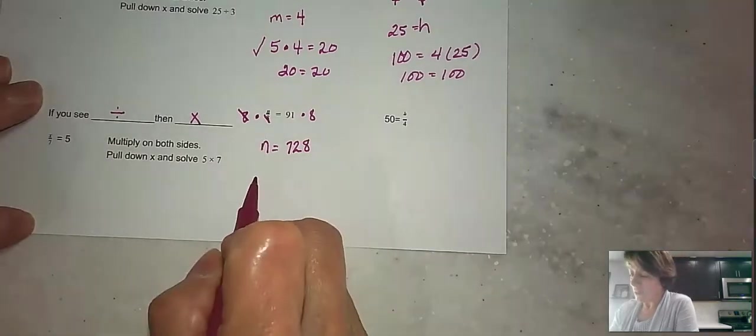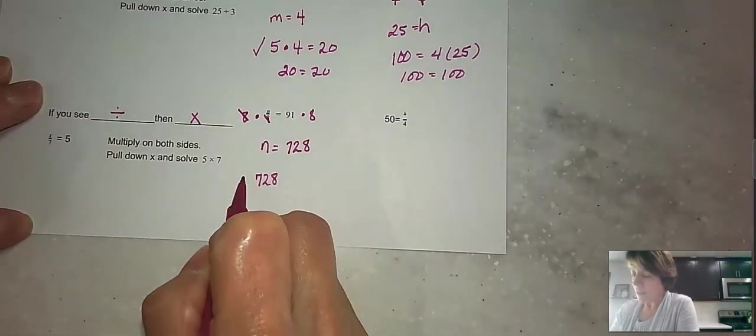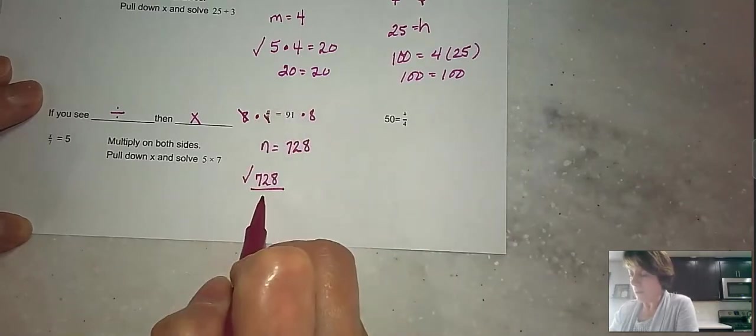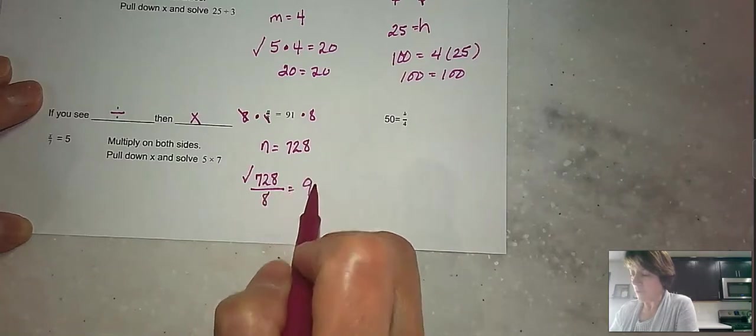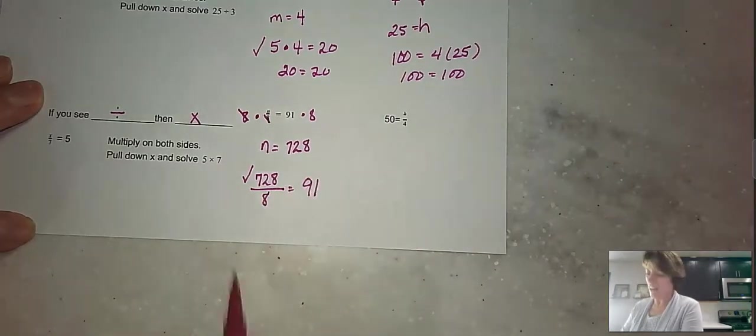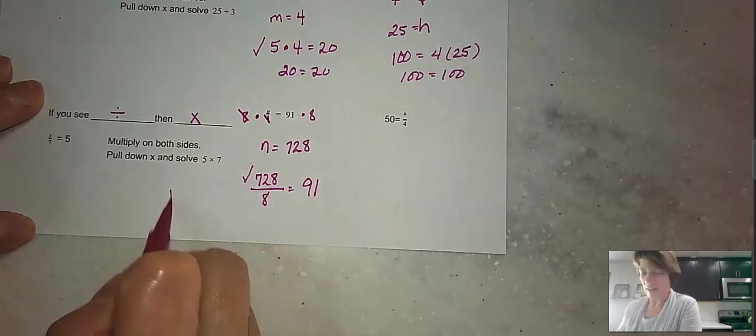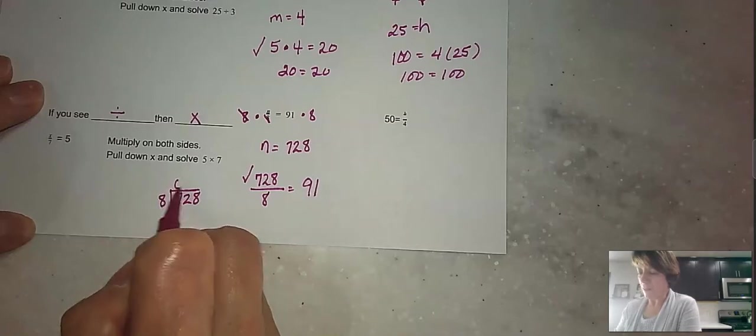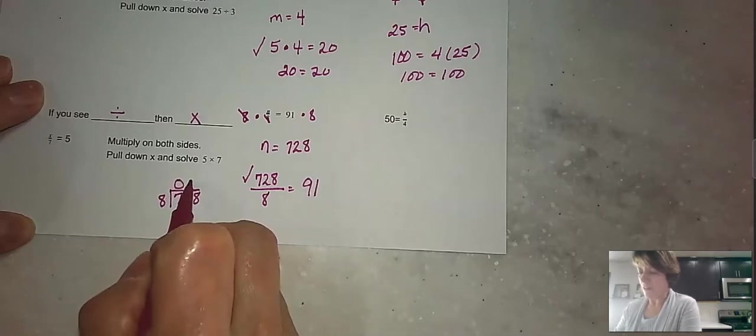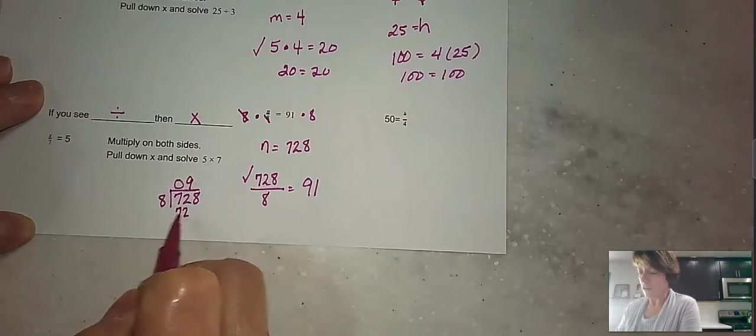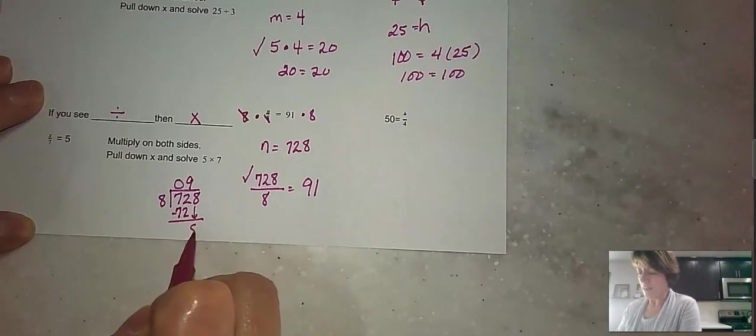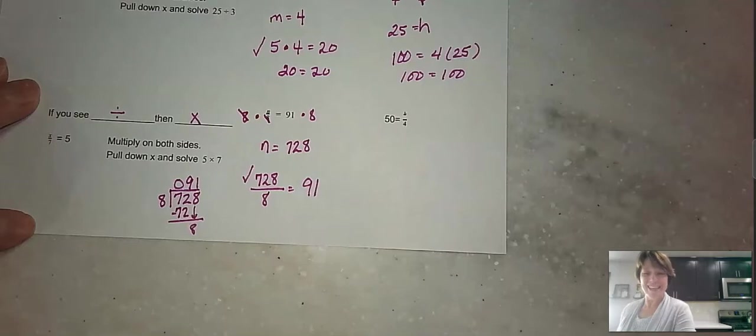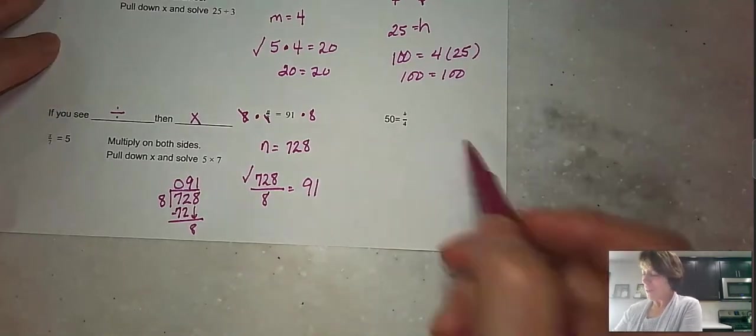Now we would go ahead and check that. We would take our 728 and substitute it in where n was in the original problem, divided by 8 equals 91. And if we did that long division, I would do that like this. I would take my 728, and I would divide it by 8. 8 divides into 7, not at all. 8 divides into 72, 9 times. Do my subtraction. Bring down my 8. And 8 divides into 8 one time. I'm out of space there. So you have to trust me that that would work out to a 0, but you can see that for yourself.